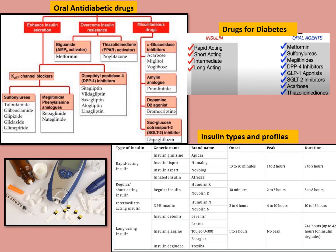Hypoglycemic drugs are divided into three groups: drugs which enhance insulin secretion, drugs which overcome insulin resistance, and a miscellaneous group. Metformin and pioglitazone overcome insulin resistance in tissues, which is what happens in Type 2 diabetes. Some drugs increase insulin secretion, like the sulfonylurea group — glibenclamide, glipizide — and repaglinide. Miscellaneous drugs include acarbose and miglitol. These are different types of insulin profiles for uncontrolled Type 2 diabetes or insulin-dependent Type 1 diabetes, covering rapid-acting, short-acting, intermediate-acting, and long-acting insulins.